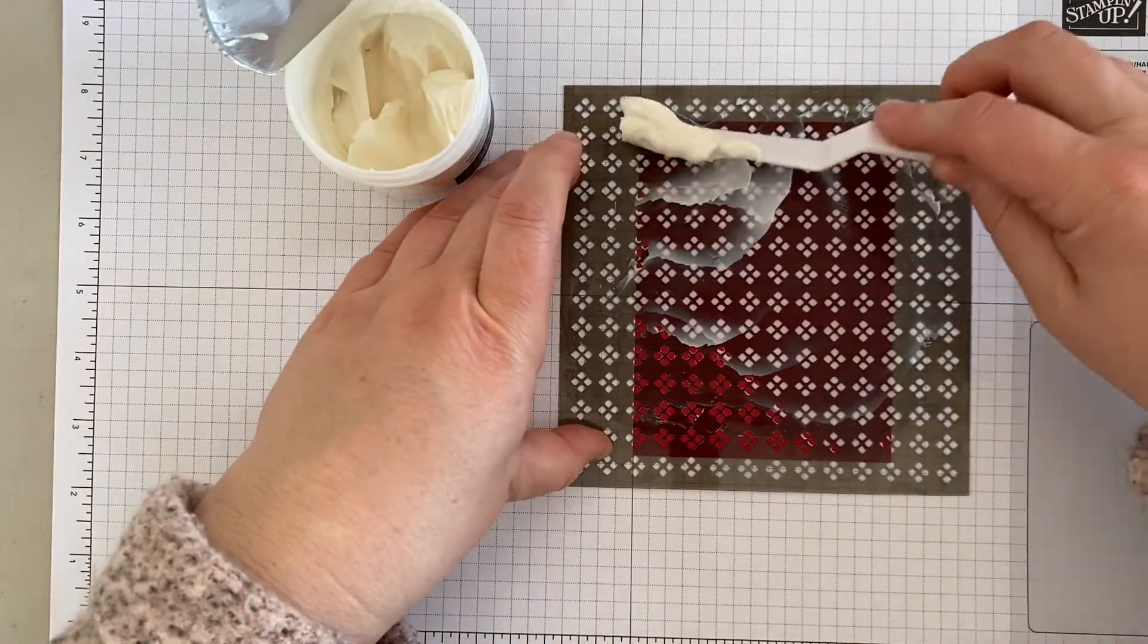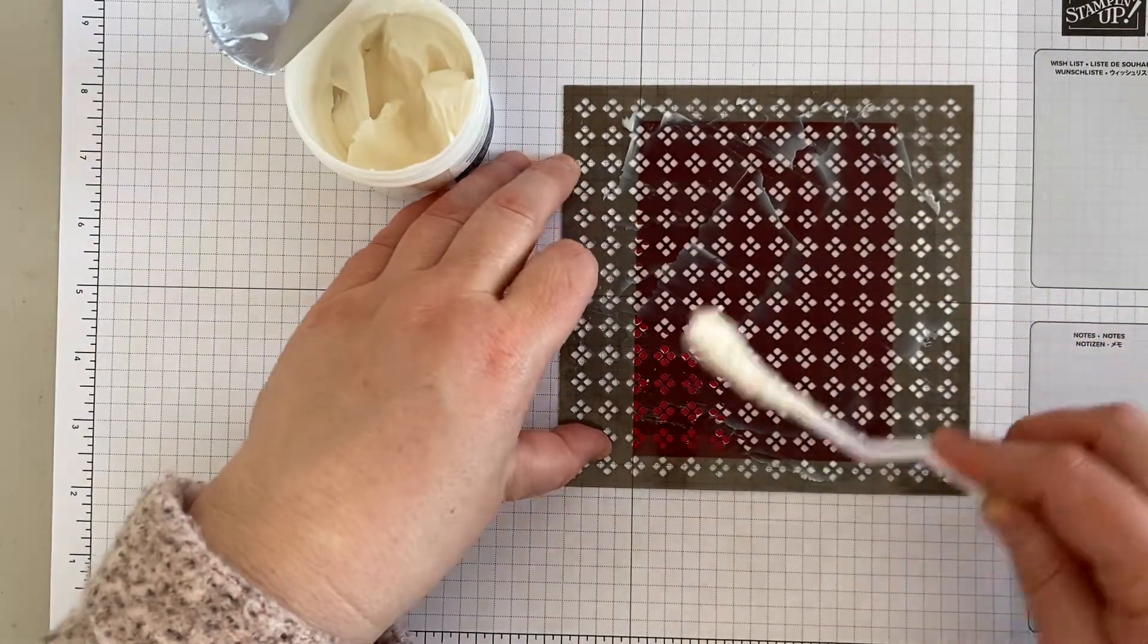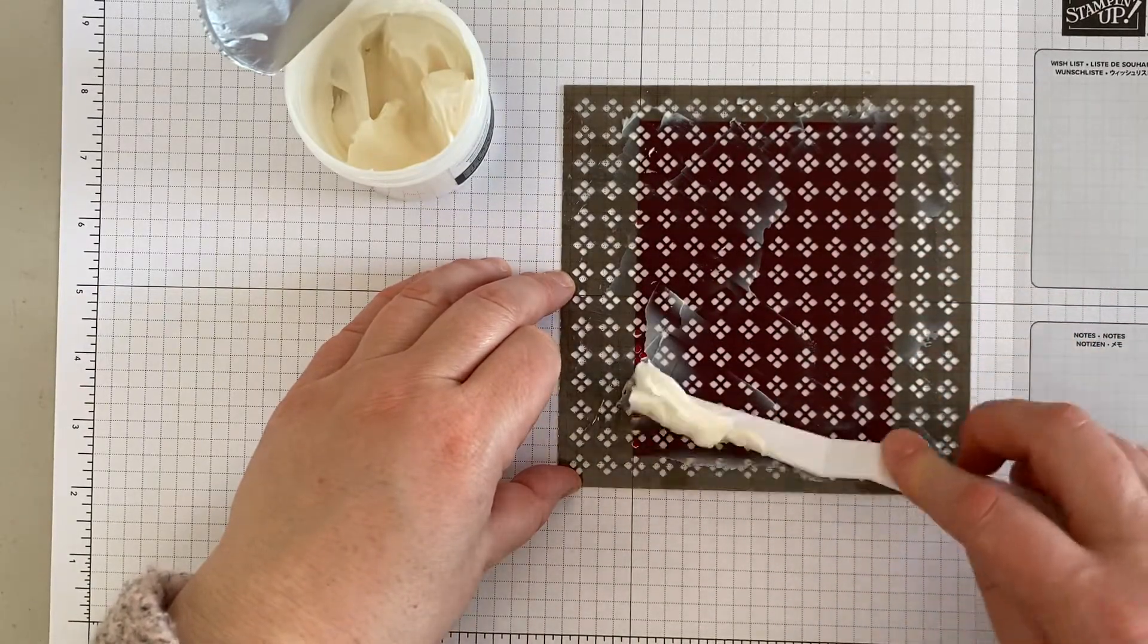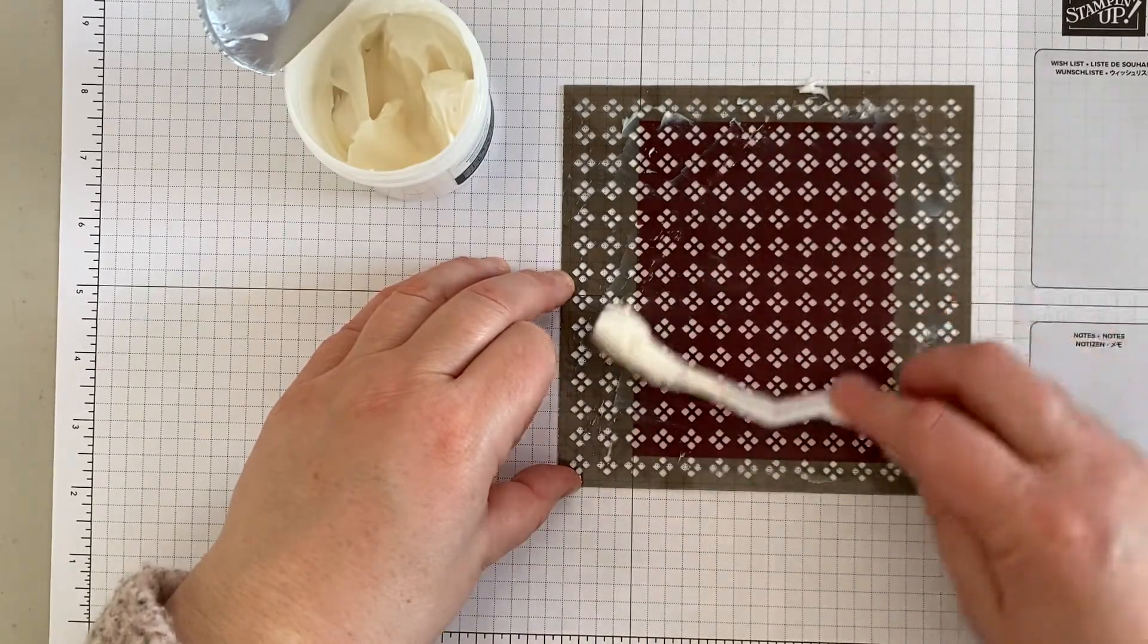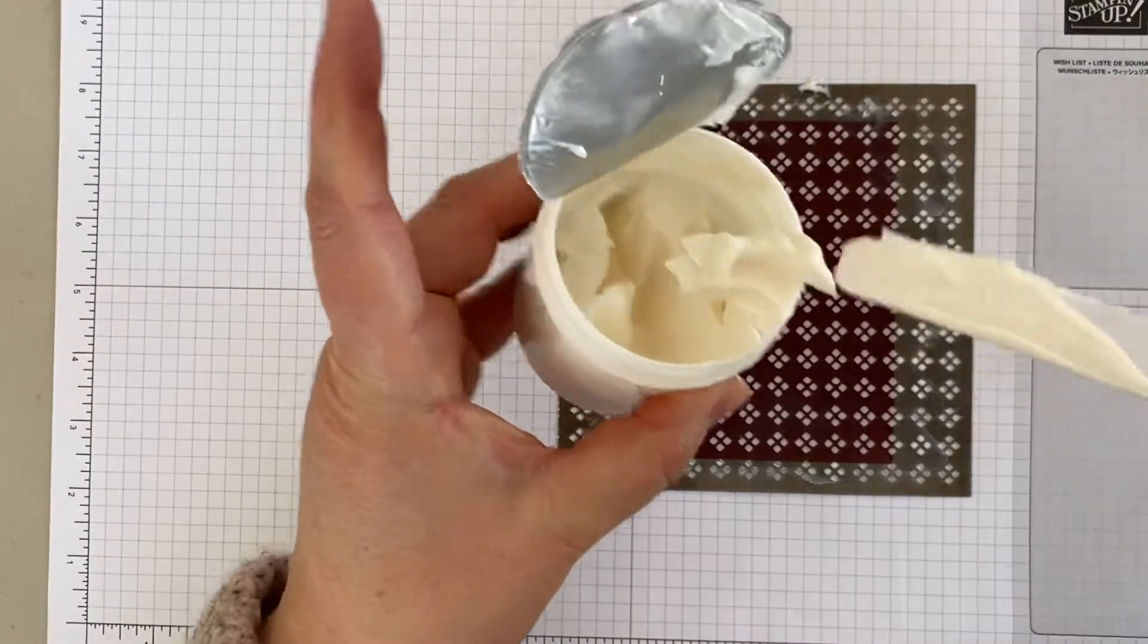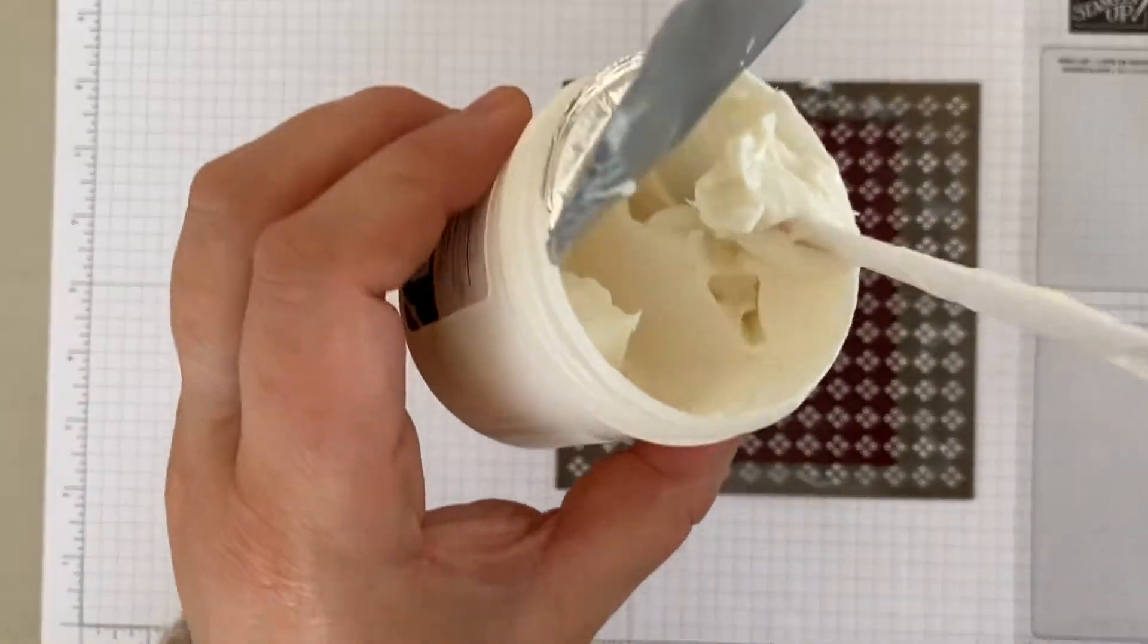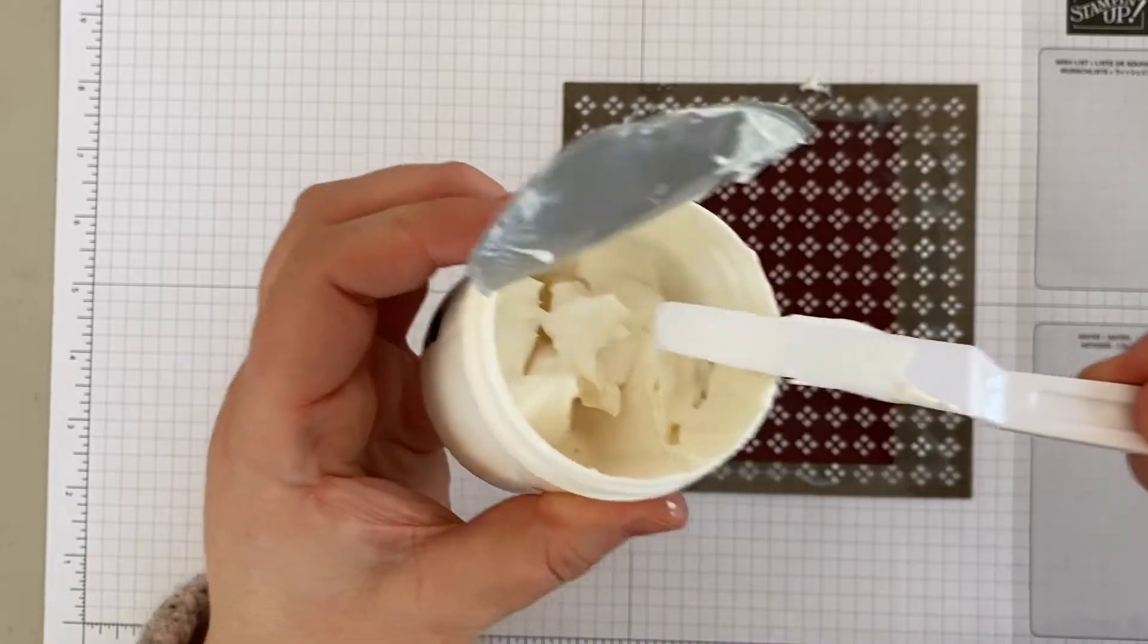Making sure I get right up to those edges of my cardstock. Once you're happy with it, you're just going to put the excess back into the container. If you had a lot on here, you could scrape it off and put it back in as well. And then try not to leave some sitting up at the top like that because it's going to dry out quicker. Try to make sure that you put it all right back together, if that makes sense.